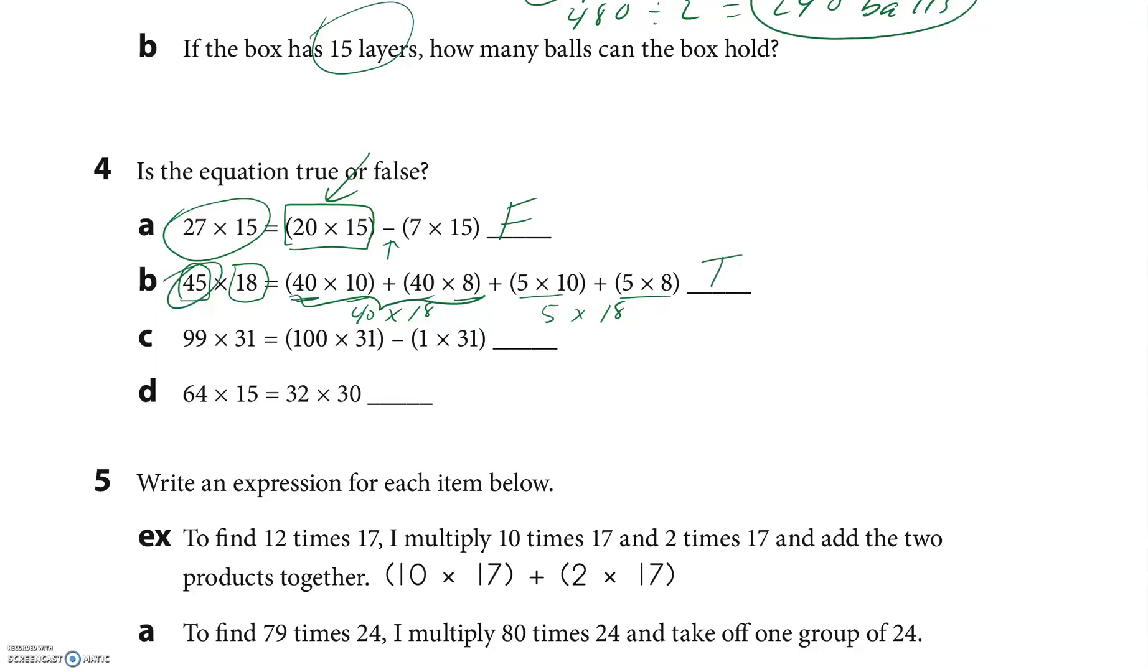The next one, 99 times 31. Well, that's 99 groups of 31. We want a hundred groups, so they'd say a hundred, you need to take one away. That's good, and it's times 31. I believe that's true.